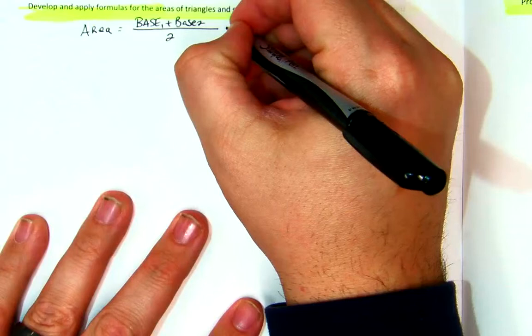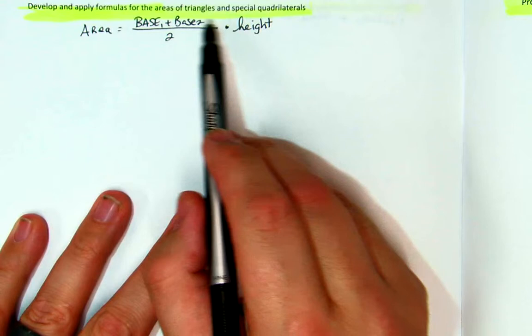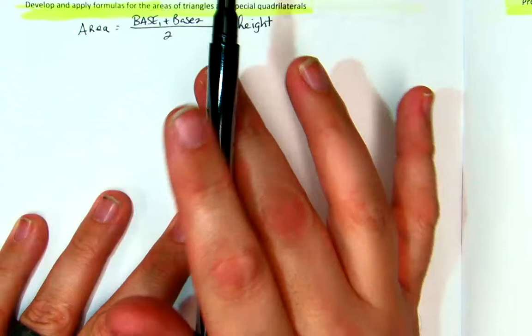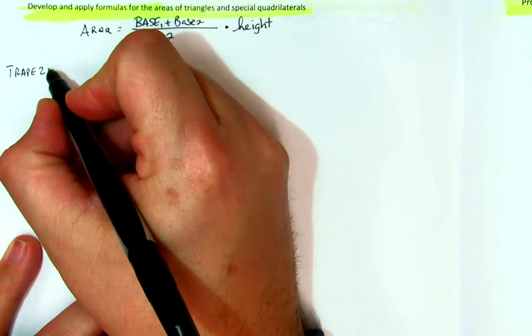This is going to take the place of all the formulas that we deal with. Now, I'm going to start with the trapezoid because this is the traditional area equation for a trapezoid. So I'm just going to draw a trapezoid.